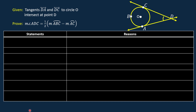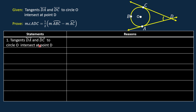In the first column, we are going to write the statements, and in the second column, the corresponding reasons. For our first statement, tangents dA and dC intersect at point D. The reason given.